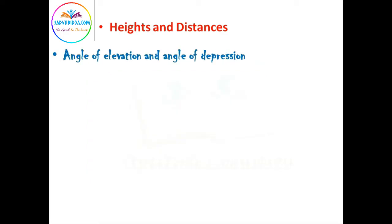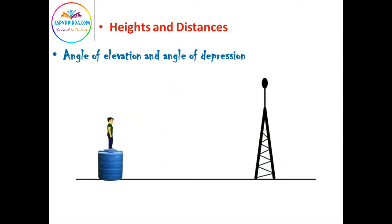Let us understand what is angle of elevation and angle of depression. To understand this, let us consider an observer and a tower. When a person observes from his normal range, that is horizontal line, when a person observes the top of a tower with certain angle with his normal range, that angle is known as angle of elevation.